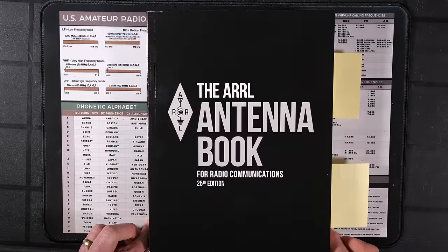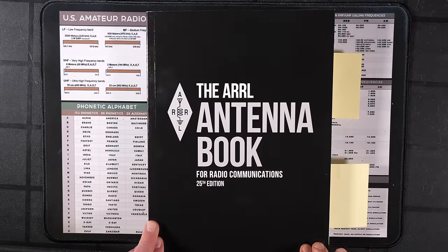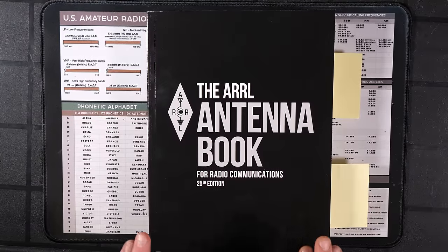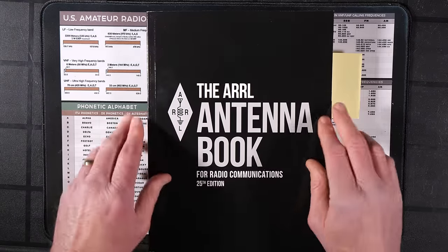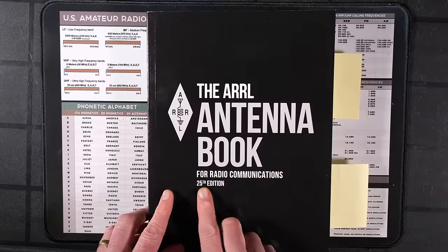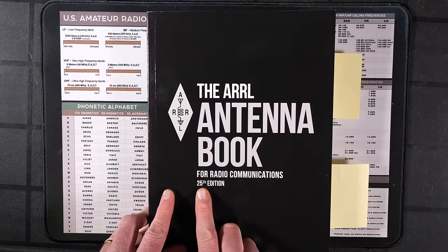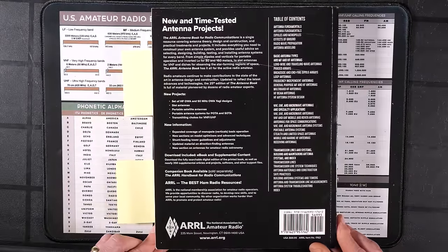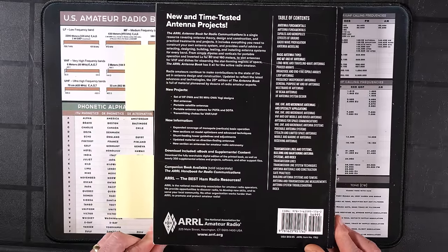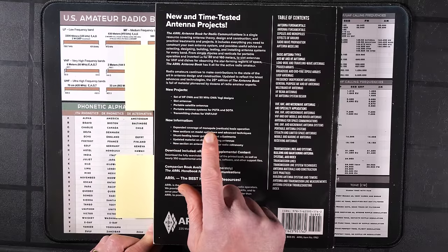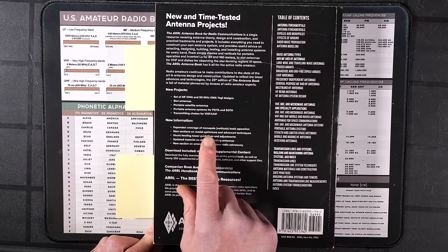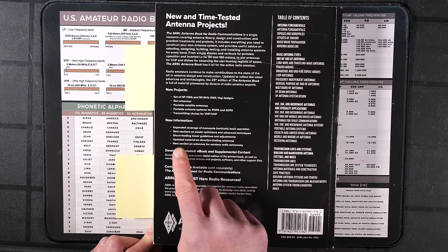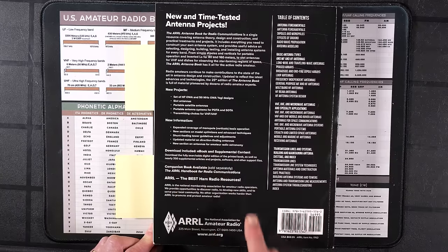We're first going to take a look at the ARRL Antenna book. This is probably going to be, for most amateur radio operators, the one that you would be most interested in. So, this is the new 25th edition. It came out in the autumn of 2023. The new 25th edition's got some new content in it, including expanded coverage of monopolar vertical antennas, new section on model optimization, shunt feeding, tower guidelines and adjustment updated material on direction finding, and a new section on antennas for amateur radio astronomy.